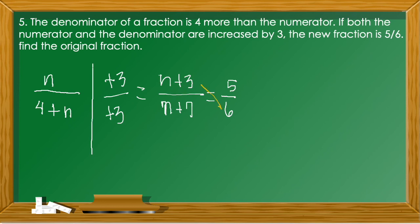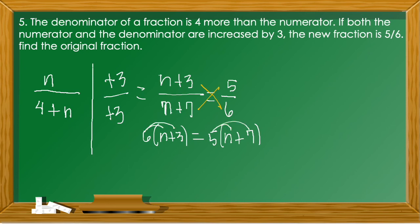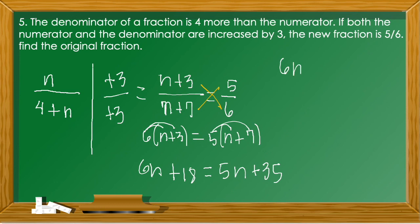Cross-multiplying: 6(n + 3) = 5(n + 7). Distributing: 6n + 18 = 5n + 35. Combining like terms: 6n − 5n = 35 − 18, giving n = 17.